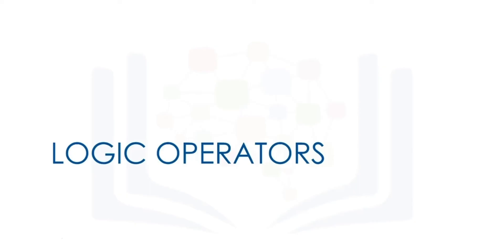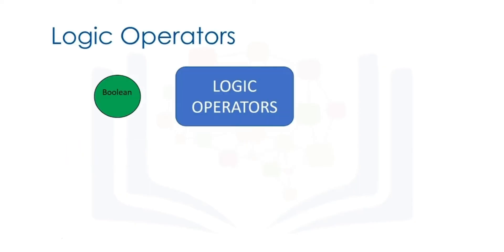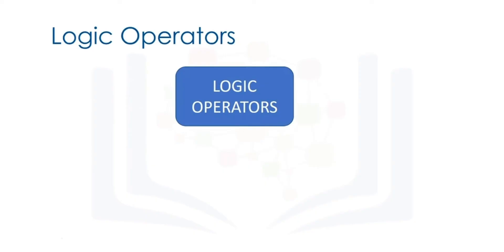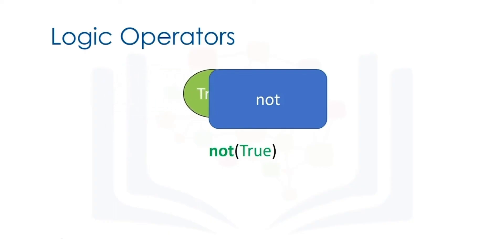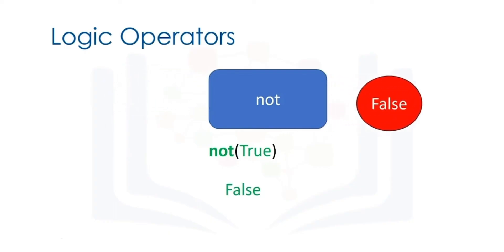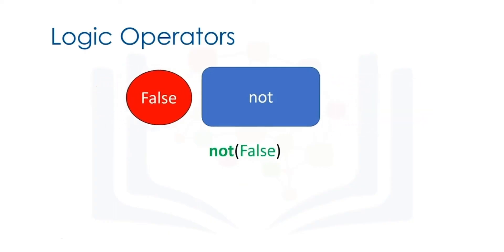Now let's take a look at logic operators. Logic operations take boolean values and produce different boolean values. The first operation is the NOT operator. If the input is true, the result is a false. Similarly, if the input is false, the result is a true.